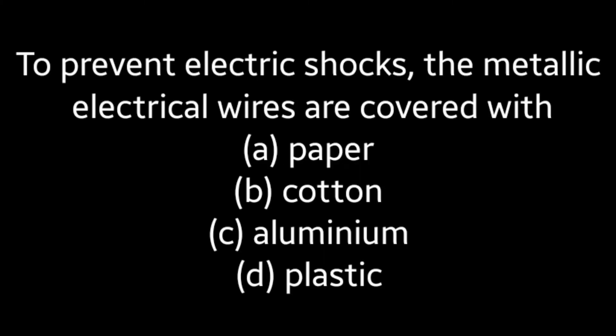Next question: To prevent electric shocks, the metallic electrical wires are covered with (A) paper, (B) cotton, (C) aluminium, (D) plastic. Answer is Option D: plastic.